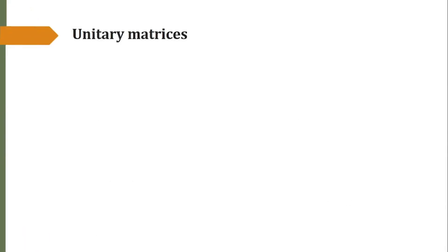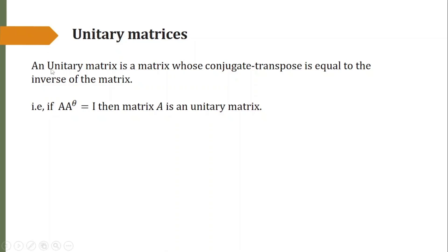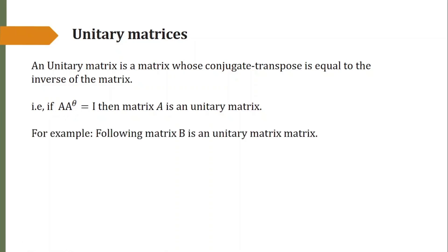Next we see what unitary matrices are. These are the matrices whose conjugate transpose is equal to the inverse of the matrix — that is, if A times A-theta equals the identity, then matrix A is called a unitary matrix. Since A-theta, the conjugate transpose of the matrix, is the inverse of it, A is a unitary matrix. For example, the following matrix is a unitary matrix.